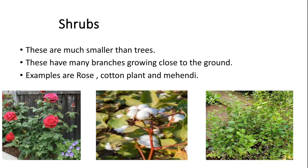Shrubs: these are much smaller than trees. They have many branches growing close to the ground. Examples are rose, cotton and mehndi.